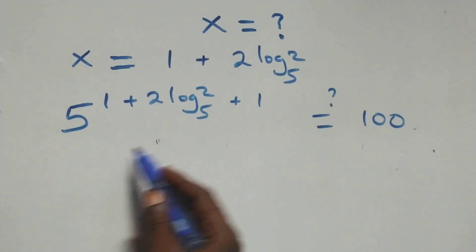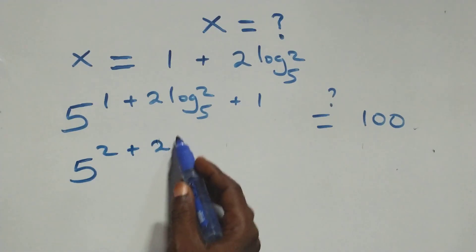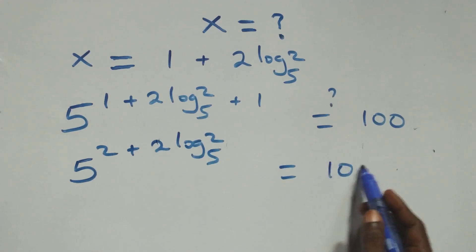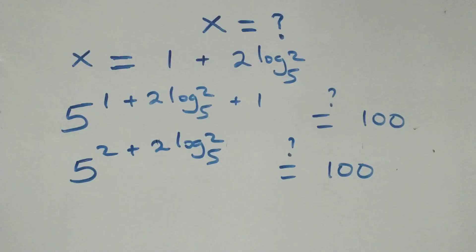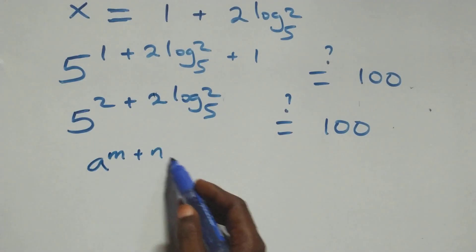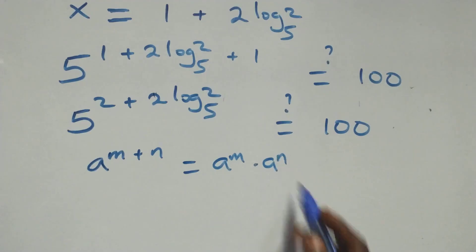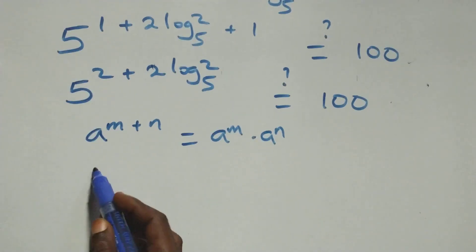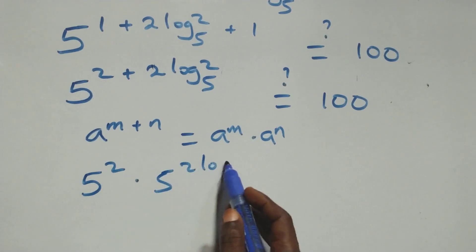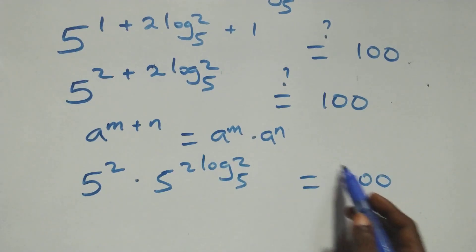Here we have 1 plus 1, so we get 5 raised to power (2 plus 2 log 2 base 5), which equals to 100 on this side. Applying the law of indices — when we have a raised to power n plus n, it is the same thing as a raised to power n times a raised to power n — this becomes 5 raised to power 2 times 5 raised to power (2 log 2 base 5), which equals to 100 on this side.